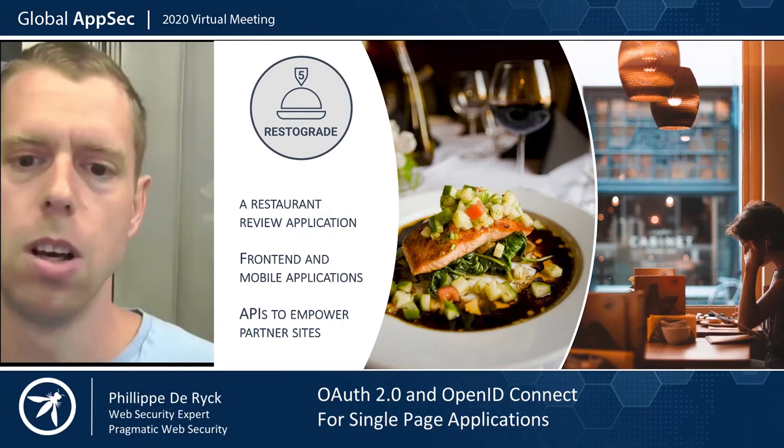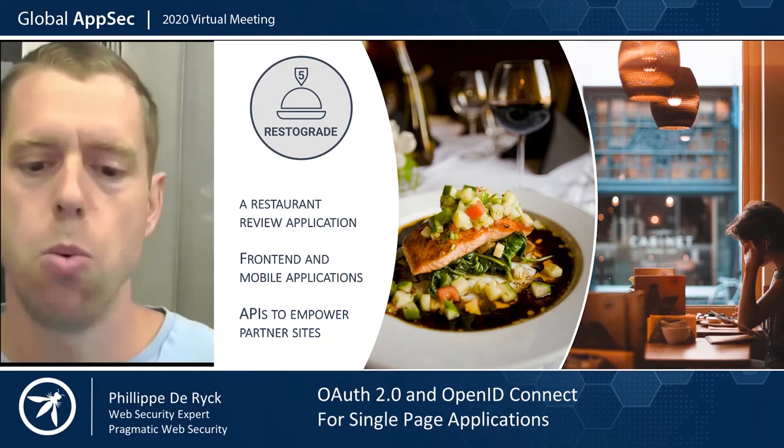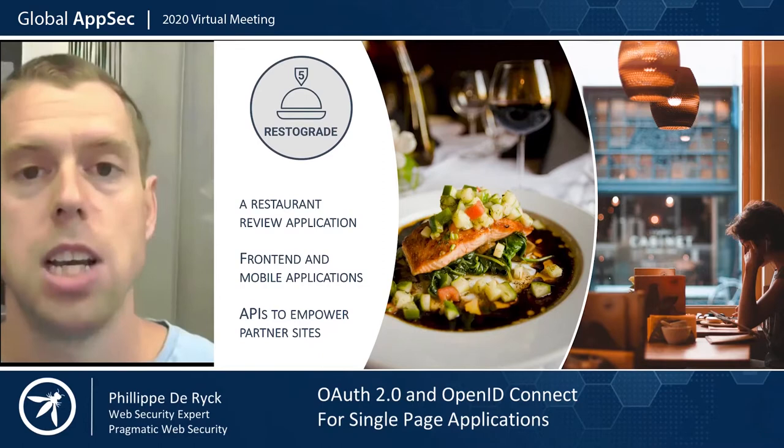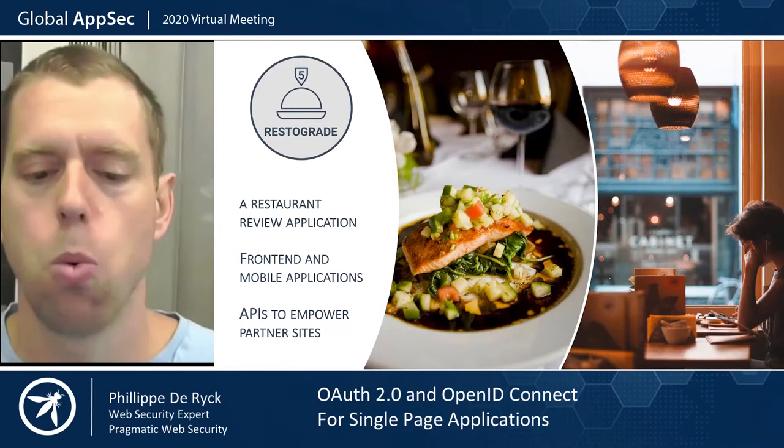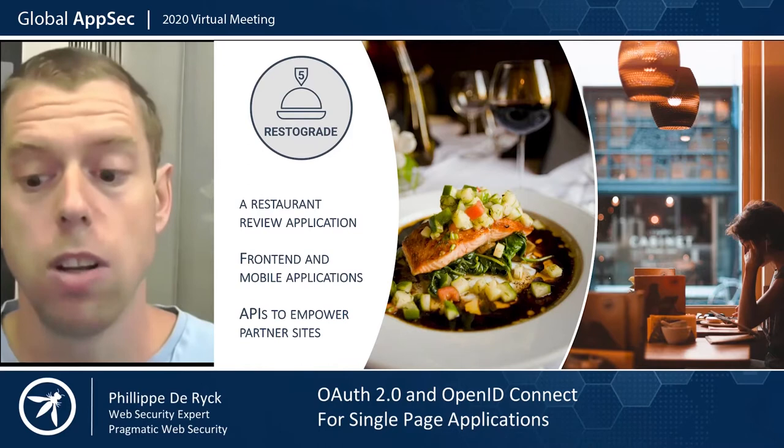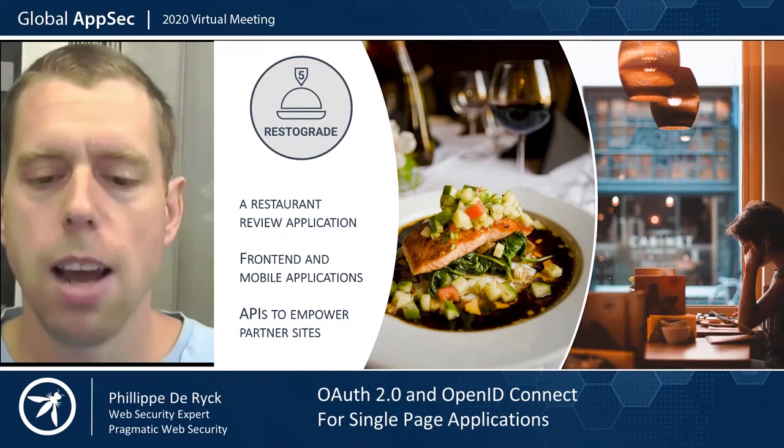RestoGrade is very much like any other review application. You have a list of restaurants, you can post a review, and so on. RestoGrade itself has a bunch of APIs, a front-end application, a mobile application, and so on. The APIs are exposed to partner websites, allowing them to build applications around RestoGrade's APIs. That's essentially the use case for OAuth and sometimes OpenID Connect as well.